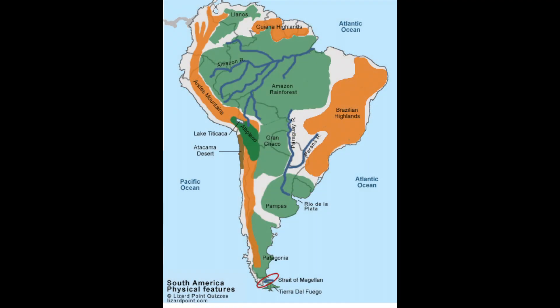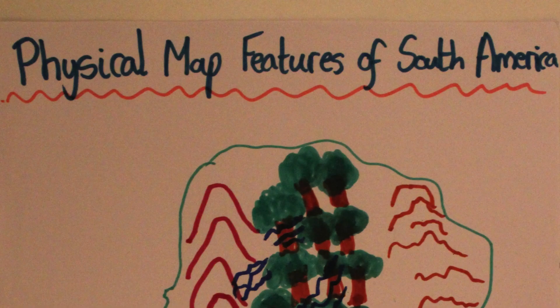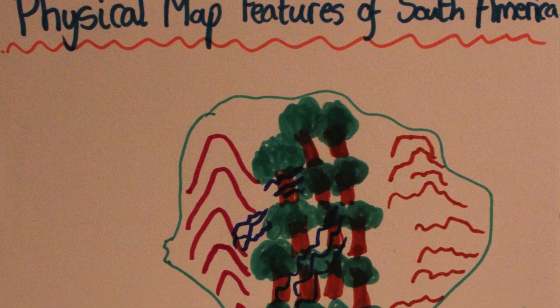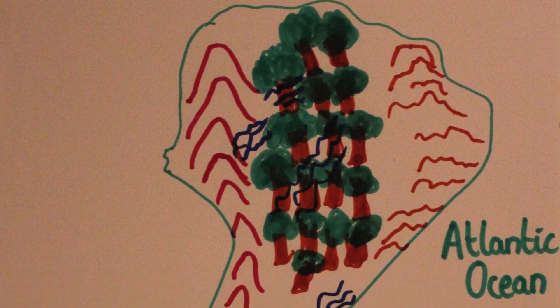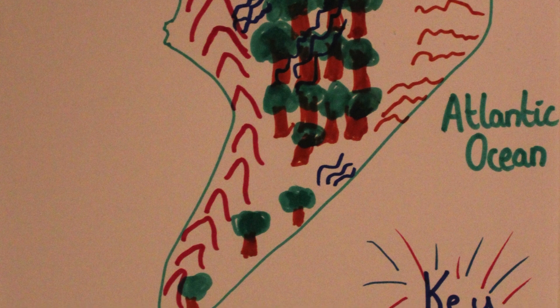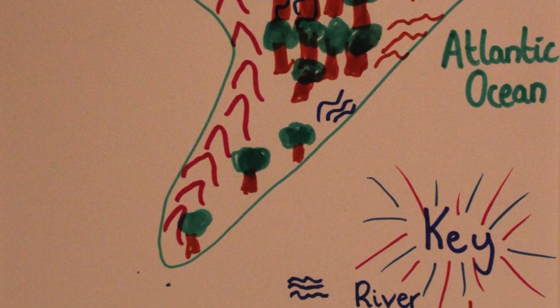Here is an image that you can use to help you with laying out your own design. This map can help you put the pictures into the correct order and the correct size. Now use the example to help you create your own map using the pictures from your key. Once you're finished, you can write your name and the title on your picture.